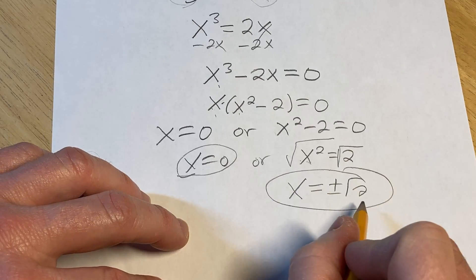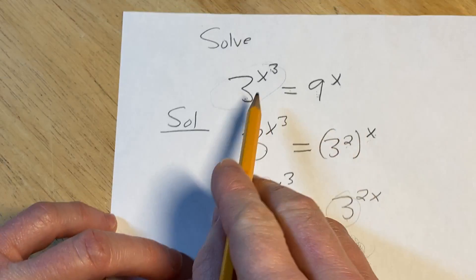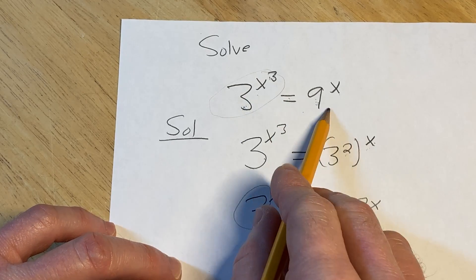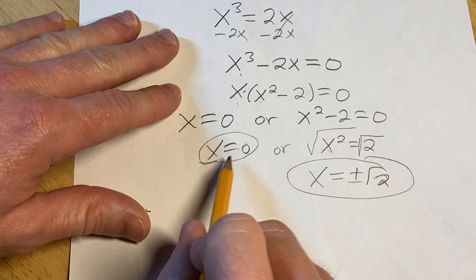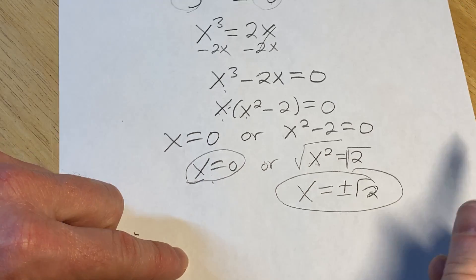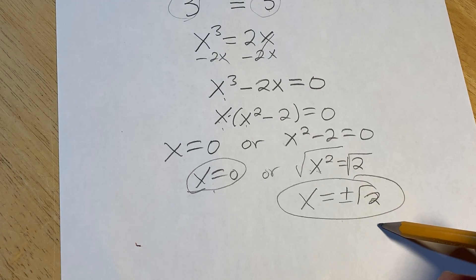So we end up with three solutions to the exponential equation, which was this one here, 3 to the x cubed equals 9 to the x. The answers would be 0 and plus or minus the square root of 2. I hope this video has helped you learn some mathematics. Good luck.